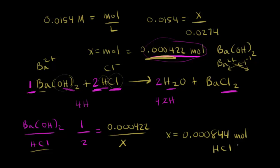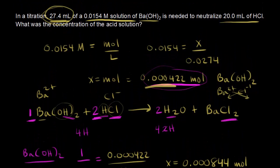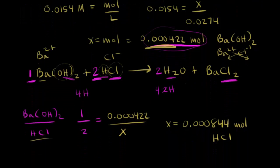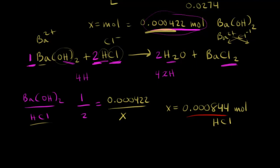So finally we just have to calculate the concentration of our acid solution. Let's go back up here so we can see what we started with. So we started with 20 milliliters of HCl. And 20 milliliters would be 0.0200 liters. So now we have moles and we have liters. So we can calculate the concentration.